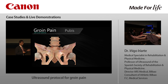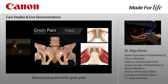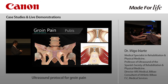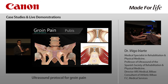Inside the pubis, we will find a disc. There are four ligaments: the superior pubic ligament, the anterior pubic ligament, the posterior one, which is the weakest one, and the inferior pubic ligament, also called the arcuate ligament.